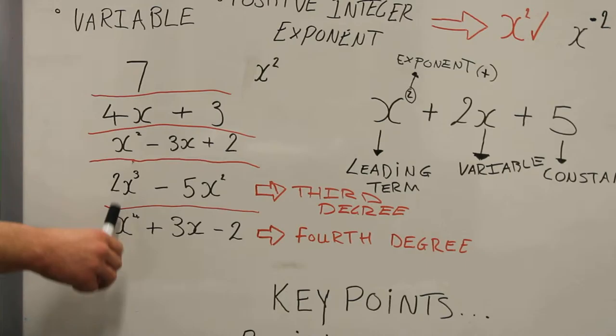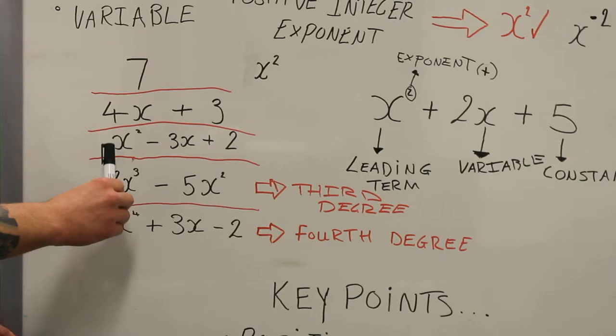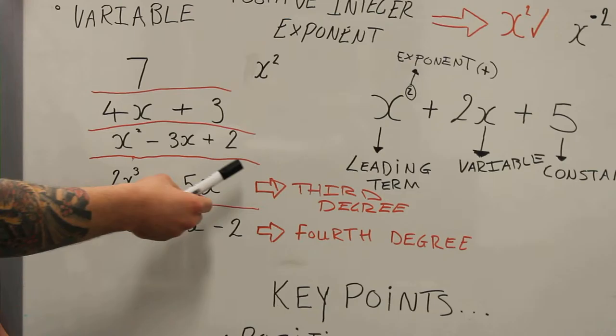We have 2x cubed, which is a third degree polynomial expression, to the power of 3. And we have x to the power of 4, which is a fourth degree polynomial expression.